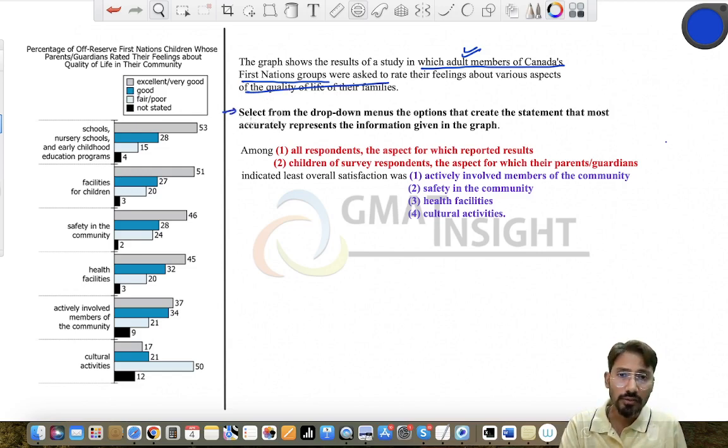Select from the drop-down menus the options that create the statement that most accurately represents the information given in the graph. Now let's quickly look at the graph. What exactly does it say?